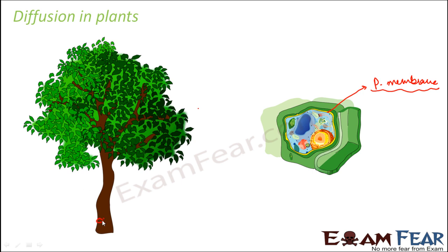Inside this plant, you will have several such cells. The cells are extremely minute and can be seen only through a powerful microscope. So when you have cells like this, how will the transport of materials happen? It will happen from one cell to another, by passing through the plasma membrane. That is where the process of diffusion comes into picture, and that is why diffusion is significant when we talk about transport in plants.